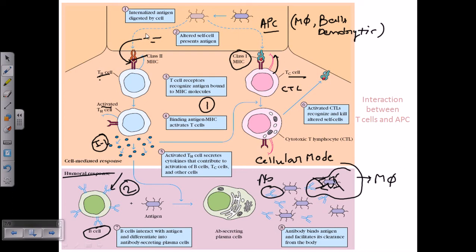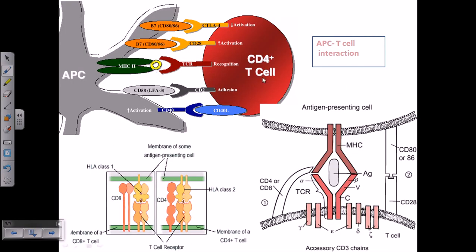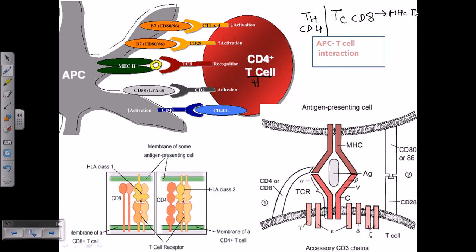If we zoom into the interaction between the T helper cell and the APC, we can see this particular image. This is a CD4 T cell, called the T helper cell. There are two types of T cells: T helper cells, written as TH, and cytotoxic T cells, written as TC. T helper cells have CD4 proteins, while TC cells have CD8 proteins. Another key difference: cytotoxic cells kill by attaching with MHC class 1, while T helper cells attach via MHC class 2.